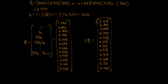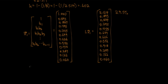Looking at the youngest age class, that value is 2.514. Computing that as a percentage of the entire population, the youngest class represents about 29.5% of the population. We're harvesting 60.2% of that youngest age class only, so 60.2% of 29.5% means that 17.8% of the entire population is harvested.